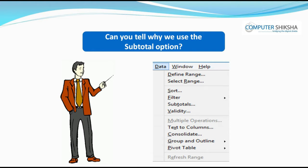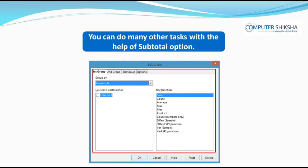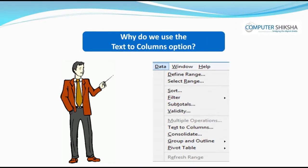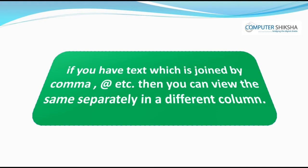Can you tell why we use the subtotal option? Using the subtotal option, you can get the total of rows one by one and you can also get the count for the rows. You can do many other tasks with the help of the subtotal option. Why do we use the text to column option? With the help of text to column, if you have text which is joined by a comma or at the rate symbol, you can view the same separately in a different column.